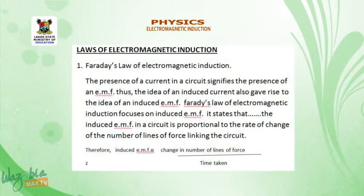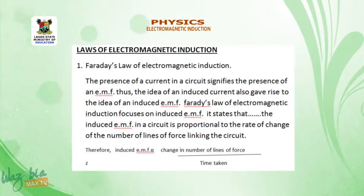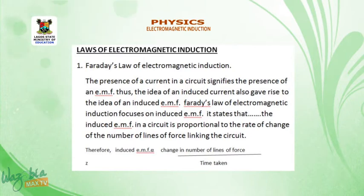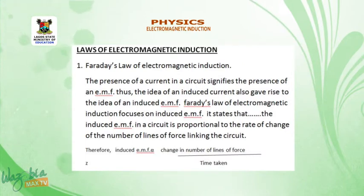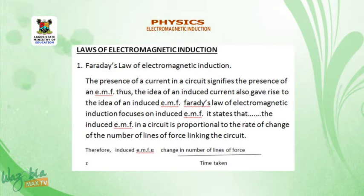Laws of electromagnetic induction. Number one: Faraday's law of electromagnetic induction. The presence of a current in a coil signifies the presence of an EMF. Thus, the idea of an induced current also gives rise to the idea of an induced EMF. Faraday's law of electromagnetic induction focuses on induced EMF. It states that the induced EMF in a coil is proportional to the rate of change of the number of lines of force linking the coil. Mathematically, induced EMF is proportional to the change in number of lines of force over time.